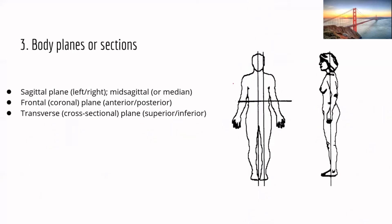Now we're going to look at body planes. There are three body planes that are pretty easy to remember. The first is the sagittal plane, which divides your body into left and right. There is a special version that goes right in the middle called the mid-sagittal or median plane.